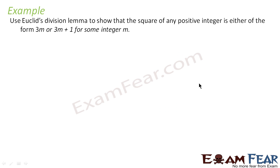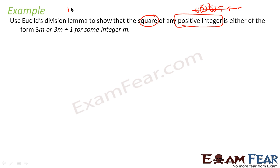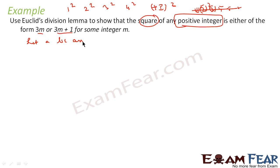Let's take one example using Euclid's division lemma. We have to show that the square of any positive integer is either of the form 3m or 3m plus 1. The question is talking about any positive integer — that is 1, 2, 3, 4, 5, 6 — and the square of that number: 1², 2², 3², 4², and so on. We have to prove that this is of the form 3m or 3m plus 1.